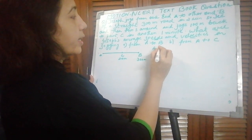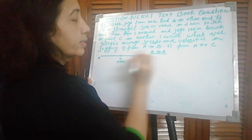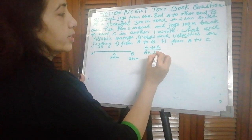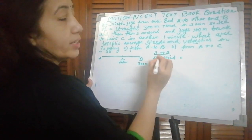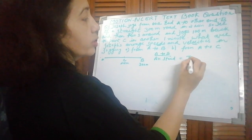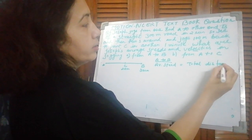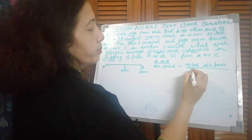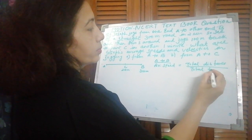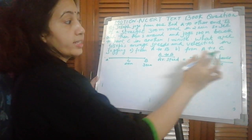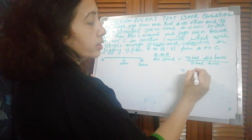So first we will take A to B, then average speed. When the word speed comes, that is total distance upon total time. Joseph traveled A to B, total distance is 300 meters.